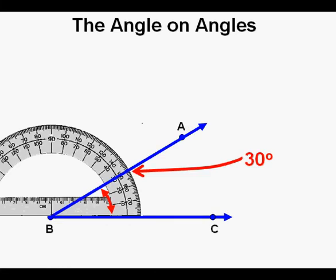Here, Angle ABC is a 30 degree angle. This angle has special meaning in a triangle as the ratio of sides.